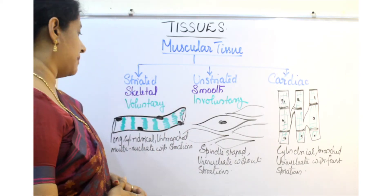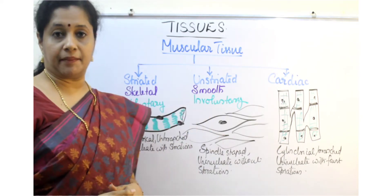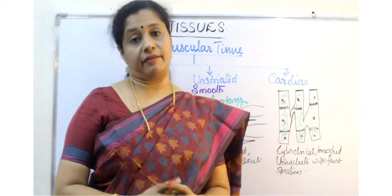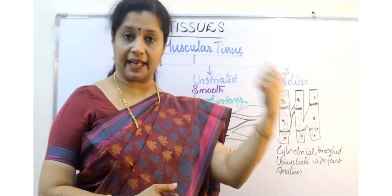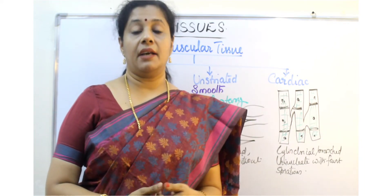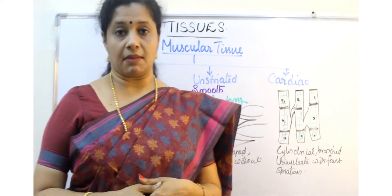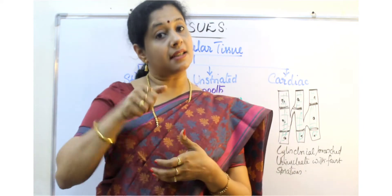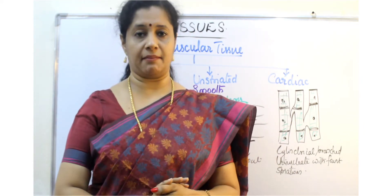Then the third name: voluntary and involuntary. Voluntary means according to our will or wish. Suppose I want to move my hands, it's under my control, I can do it. But if I want to stop the action of my stomach, suppose my stomach is churning food and I'm telling my stomach please stop for some time...